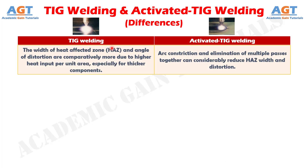Number 6: in TIG welding, the width of the heat affected zone and angle of distortion are comparatively more due to higher heat input per unit area, especially for thicker components, whereas in activated TIG welding, arc constriction and elimination of multiple passes together can considerably reduce heat affected zone width and distortion.